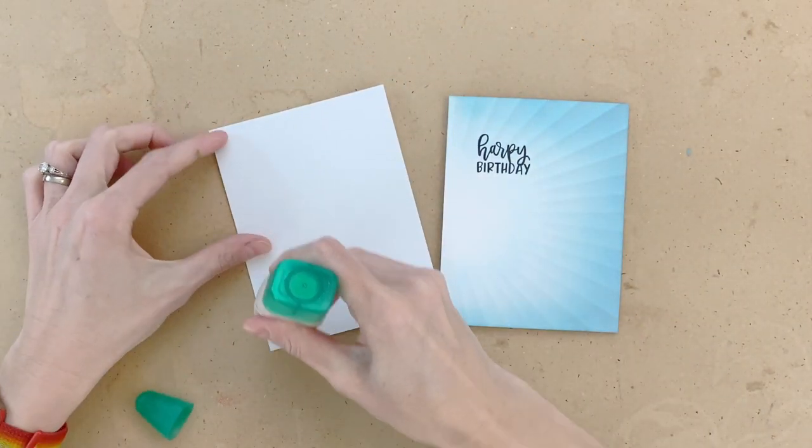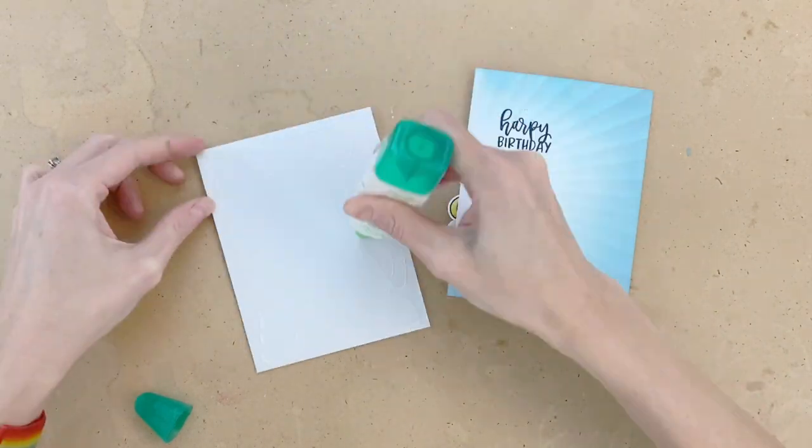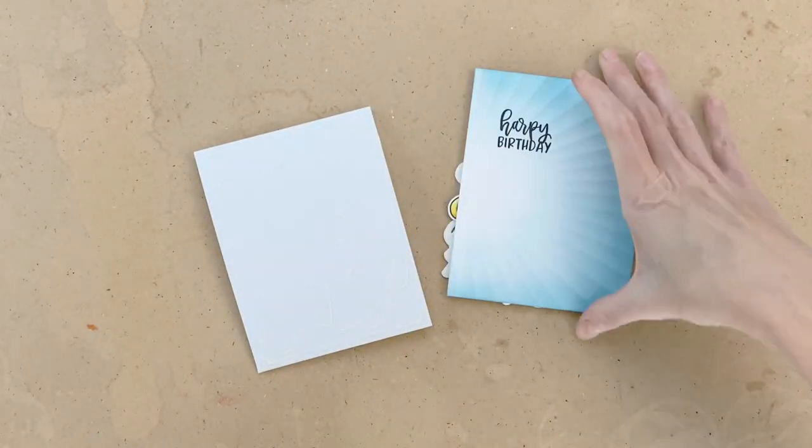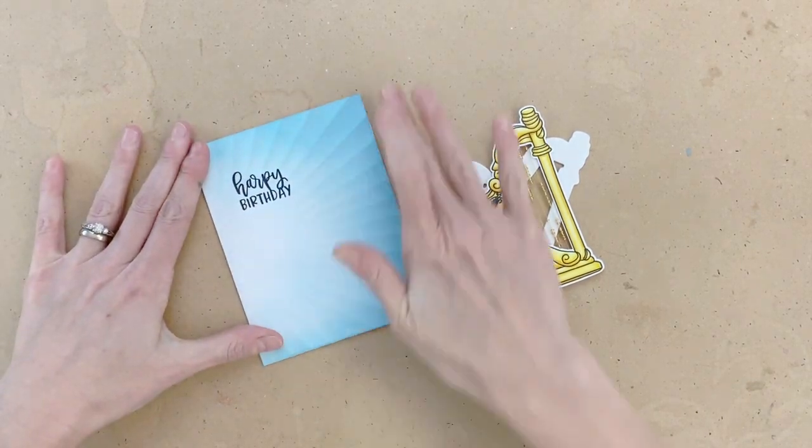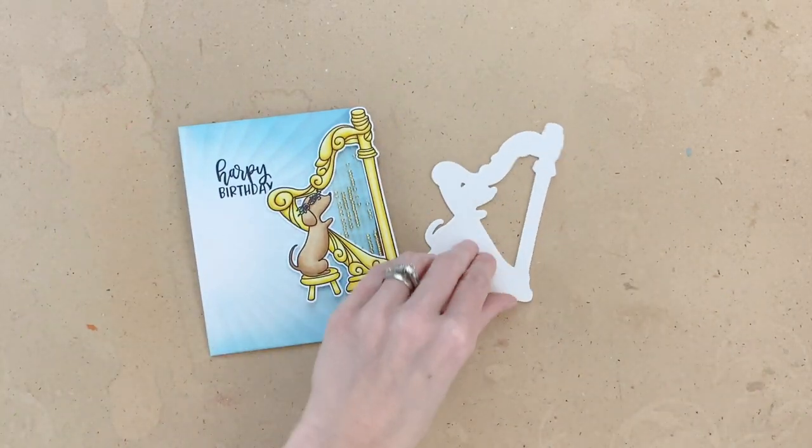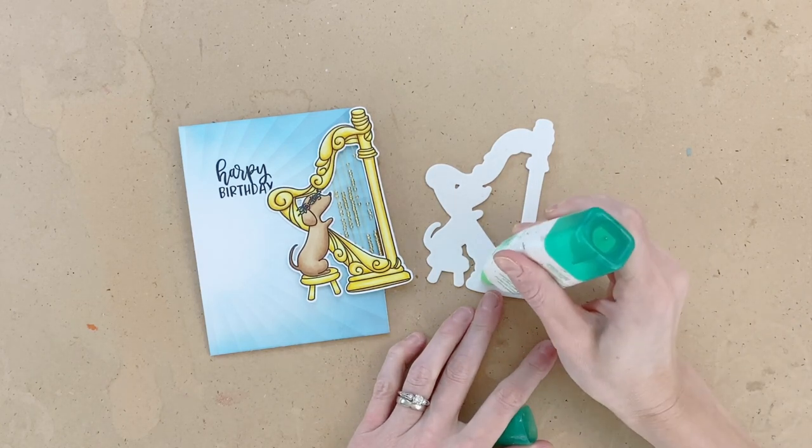The first thing I'm going to do is adhere this panel onto the front of an A2 top folding card base made from 110 pound white cardstock. I like to use liquid adhesive for that just to make sure I have a little bit of wiggle room to make sure that panel is perfectly aligned with the front of the card base.